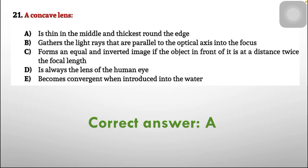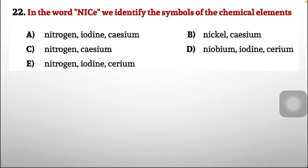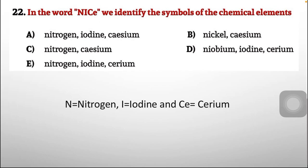Question 22: In the word 'NICe', identify the symbols of the chemical elements. Options include nitrogen-iodine-cesium, nickel-cesium, nitrogen-cesium, niobium-iodine-cerium, and nitrogen-iodine-cerium. In 'NICe', there are three capital letters and 'e' is a small letter, so capital letters represent elements. N stands for nitrogen, I for iodine, and Ce stands for cerium. This matches option E, so E is the correct answer.